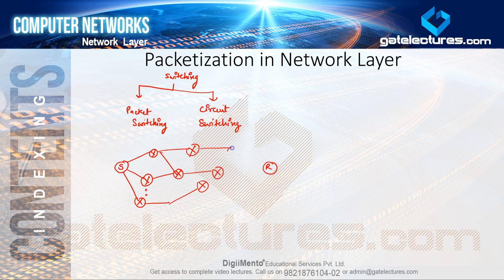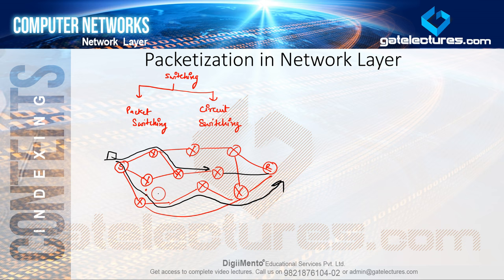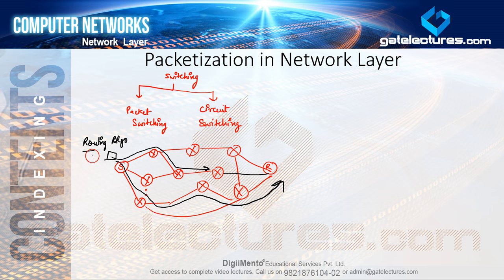In packet switching, every data packet can take a different path. Between the sender and receiver there may be multiple paths present. A data packet can go through any of these paths, and the path is decided by a routing algorithm. A lot of research has been done on routing algorithms — based on network efficiency, reliability, and so on.